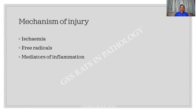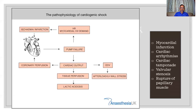What is the ultimate mechanism of injury in a case of shock? It can be ischemia — lack of oxygen — second is release of free radicals, and third is mediators of inflammation. Please remember these three: ischemia, free radicals, mediators of inflammation.